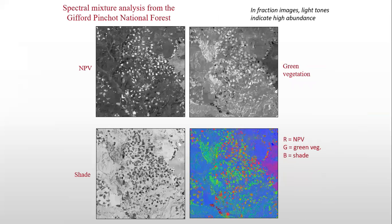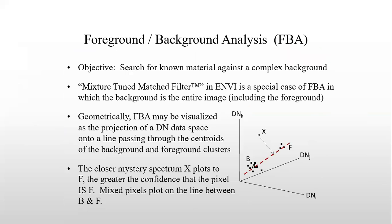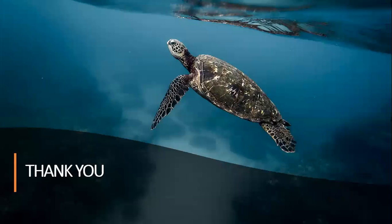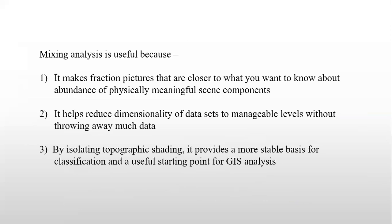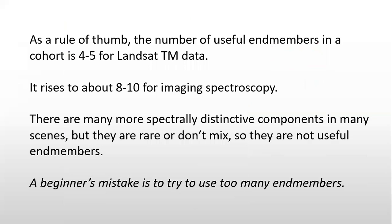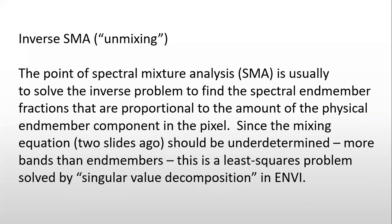So G stands for green vegetation, B for shade, and NPV for non-photosynthetic vegetation. It is all connected with certain formulas and statistics. Hope you are getting the concepts — not just enjoying them, but getting them. Finally, ask questions and I will try to clarify. Thank you so much for watching this video lesson.